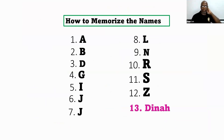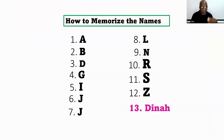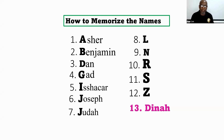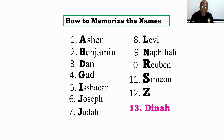Now let's memorize the names. We're going to do it by alphabet. If you say the letter A, there's Asher. B — Benjamin. C, we don't have any C. D — Dan. E and F, none. G — Gad. H, none. I — Issachar. J — Joseph and Judah. K, then L — Levi. M, none. N — Naphtali. O, P, Q, none. R — Reuben. S — Simeon. T, U, V, none. Z — Zebulun. Use the alphabet and you'll get everybody correct.